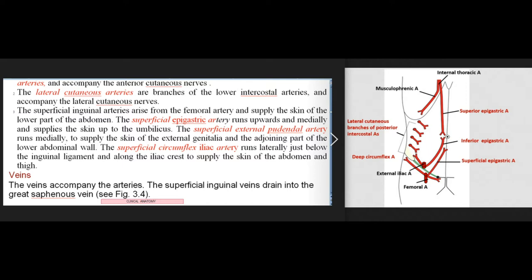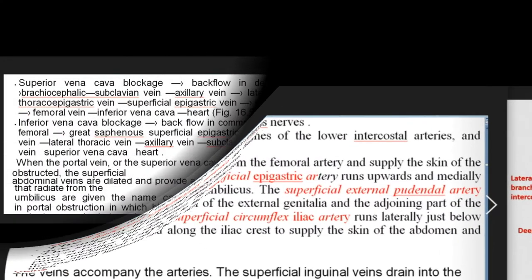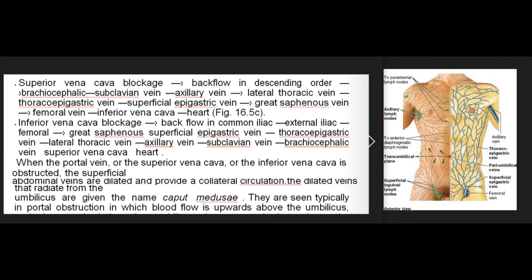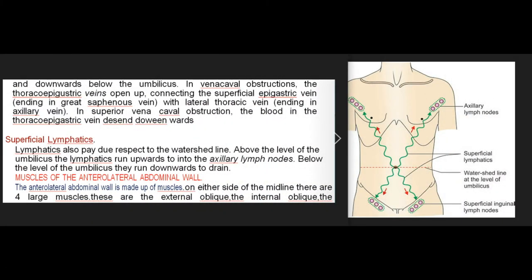Veins. The veins accompany the arteries. The superficial inguinal veins drain into the great saphenous vein. When the portal vein, superior vena cava, or inferior vena cava is obstructed, the superficial abdominal veins are dilated and provide a collateral circulation. The dilated veins that radiate from the umbilicus are given the name caput medusae. They are seen typically in portal obstruction, in which blood flow is upwards above the umbilicus and downwards below the umbilicus.